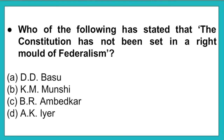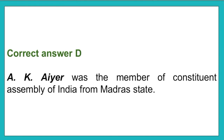The next question: Who among the following has stated that the constitution has not been set in the right mold of federalism? Option A: D.D. Basu. Option B: K.M. Munshi. Option C: B.R. Ambedkar. Option D: AKIR. The correct answer is option D, that is AKIR, who was a member of the constitution assembly of India for Madras state.